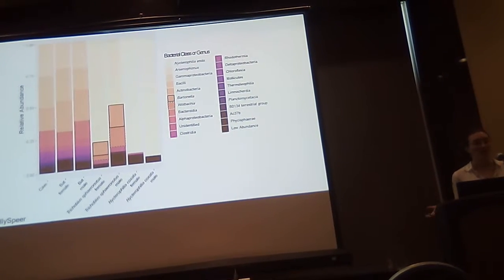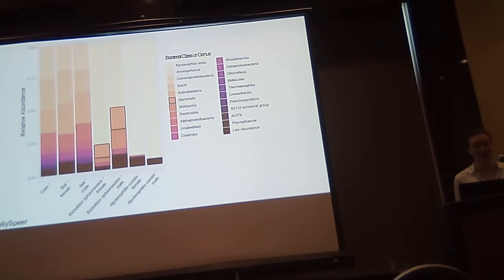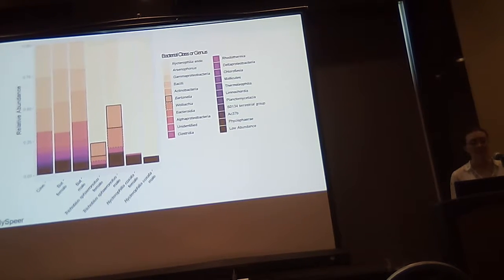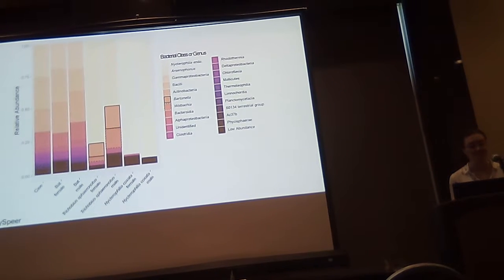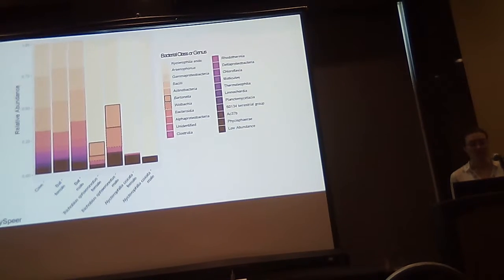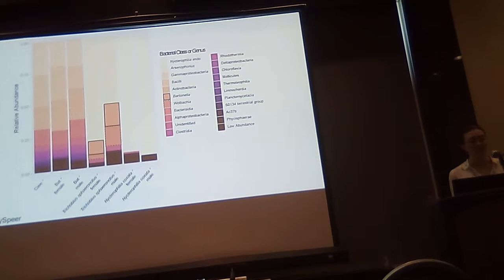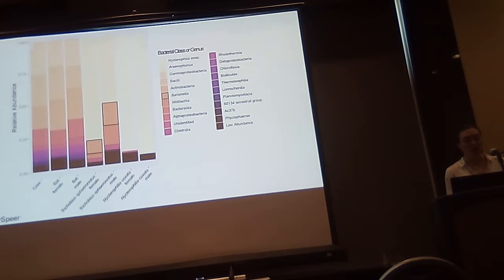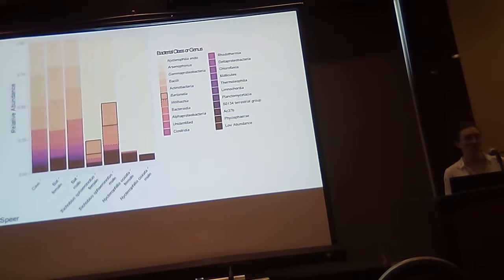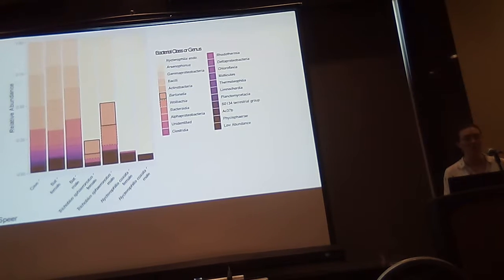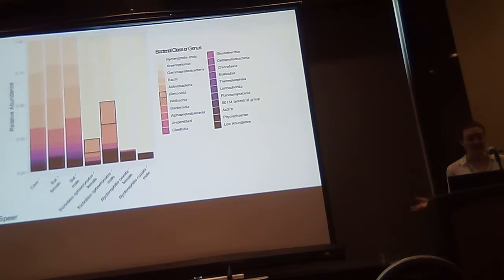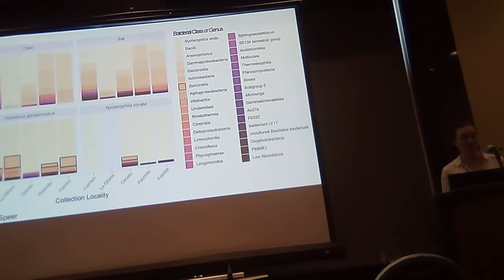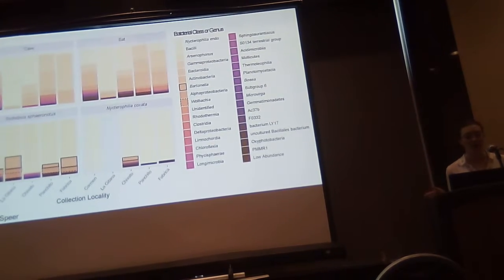Taking a qualitative look at our results — this is average relative abundance by sample type. Each bar is a different sample type, the y-axis is relative abundance, and the different colors represent either different classes of bacteria in the cave and bat samples, or different genera of bacteria in the bat fly samples. Generally, the bat fly samples, which are the four bars on the right, are dominated by their primary endosymbionts. Those primary endosymbionts are different between the bat flies, and the bat flies are qualitatively much different from their bat and cave samples, which are not dominated by one bacterium.